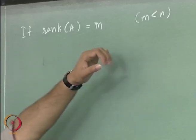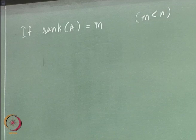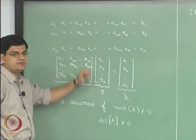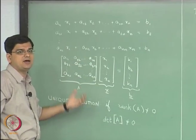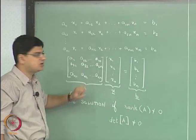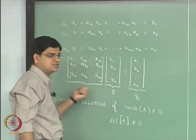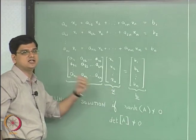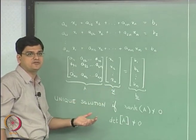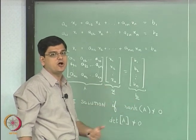If rank of A is equal to m, then we will have either 0 solutions or infinite number of solutions. What we had seen in the previous lecture is: if we represent each of the columns of matrix A as vectors — v₁, v₂, and so on up to vₙ — then if b̄ can be expressed as a linear combination of these vectors, there will be infinite number of solutions. If it cannot be represented as a linear combination of these vectors, there will not be any solution.